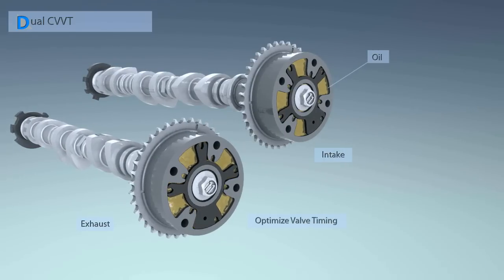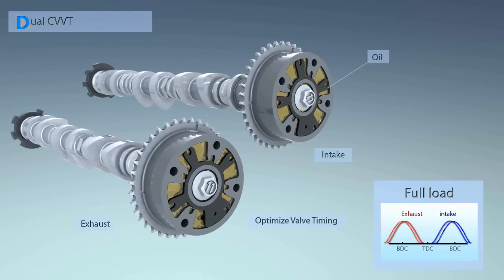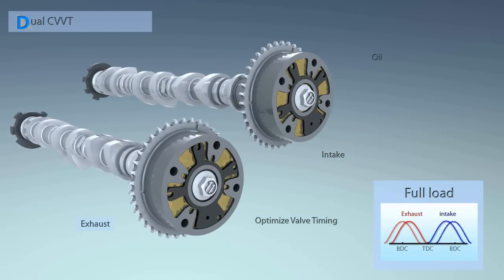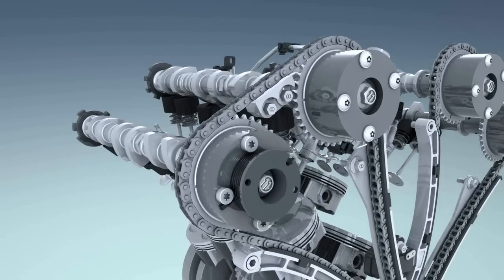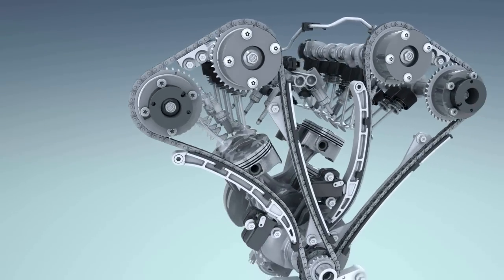CVVT operates with hydraulic pressure and optimizes the opening and closing timing of the valves. The exhaust valves are retarded to increase internal exhaust gas recirculation, improving fuel economy and exhaust gas emissions.